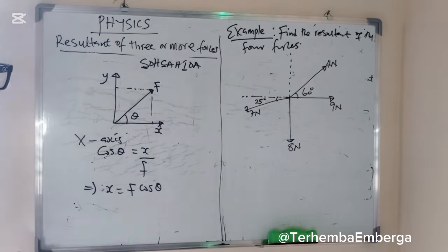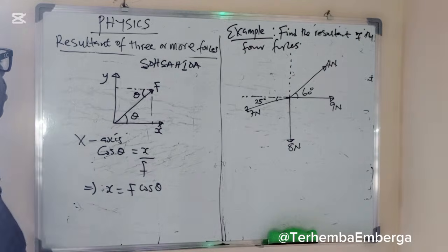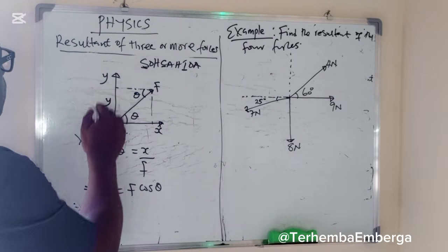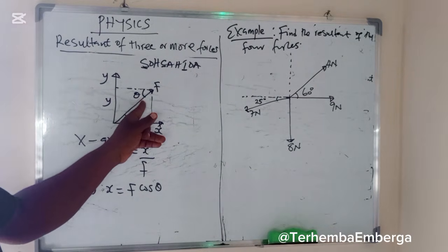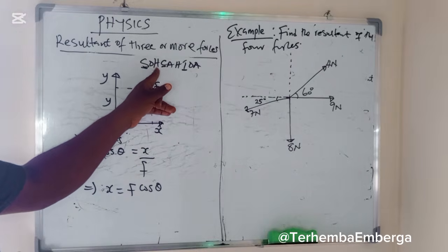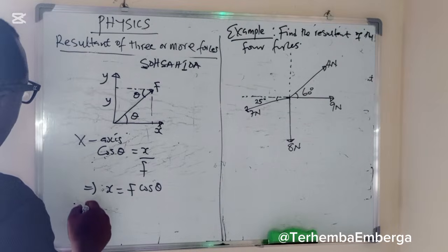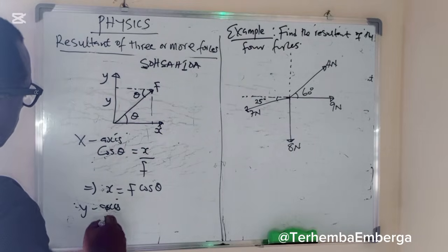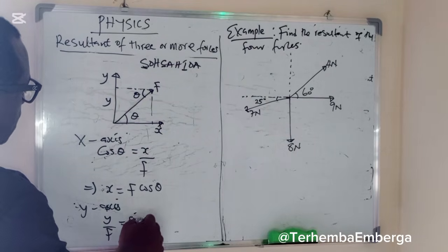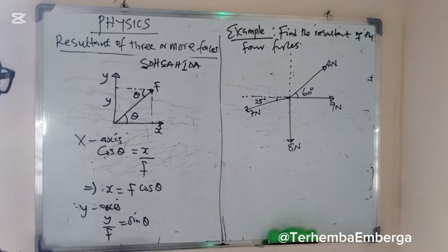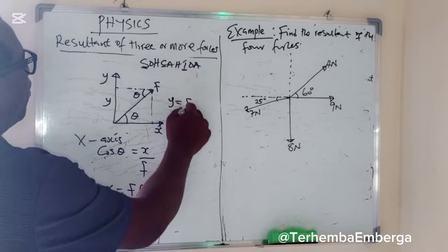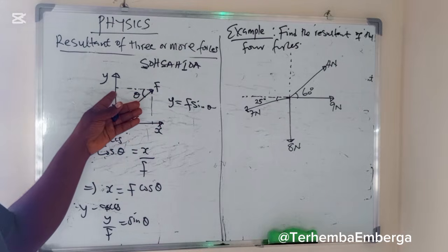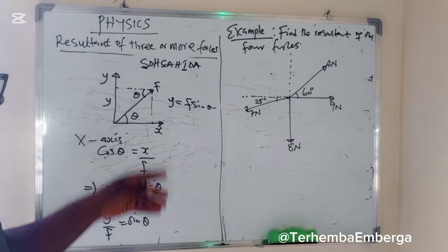Similarly, when resolving on the y-axis, we use the alternate angle. This makes the y-component the opposite side and F the hypotenuse. So we are talking about opposite over hypotenuse, which gives sine. For the y-axis: y/F = sin θ, so y = F sin θ. Many people don't know why — when resolving on the y-axis it's sine, and when resolving on the x-axis it's cosine.